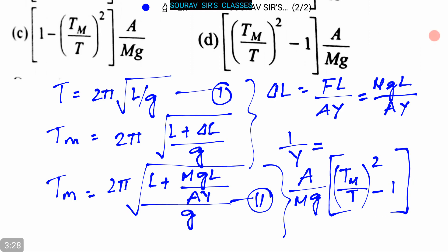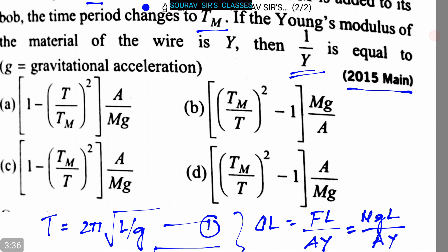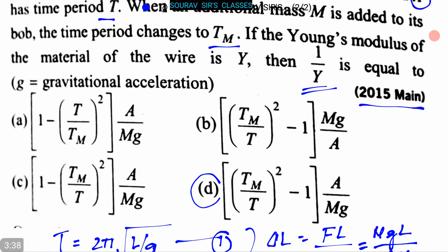So here, 1 by Y equals TM by T whole square minus 1, which is option D. So 1 by Y equals A by MG into TM by T whole square minus 1. This is our answer.